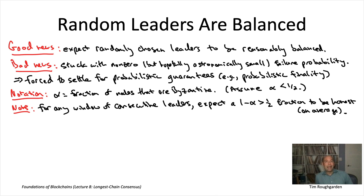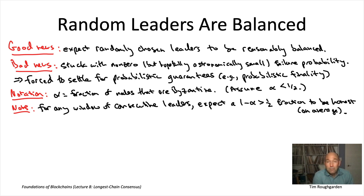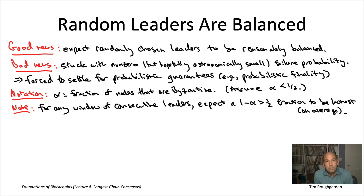If we look at 1,000 consecutive leaders, we expect 510 of them on average to be honest and 490 to be Byzantine. Looking at a given window of 100 leaders, you're not generally going to see exactly 51% honest — there'll be a little variation. On average you expect 51 honest and 49 Byzantine, but sometimes a little more, sometimes a little less. With only a margin of two nodes between the averages, we wouldn't be surprised to occasionally see a window of 100 where 51 are Byzantine and 49 are honest, violating balancedness.